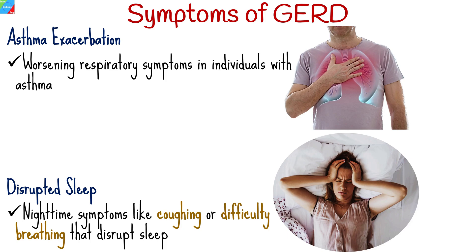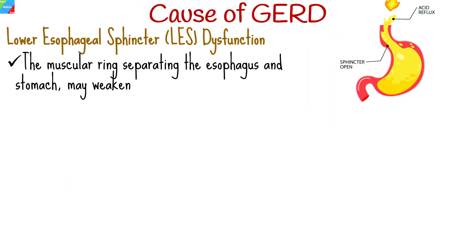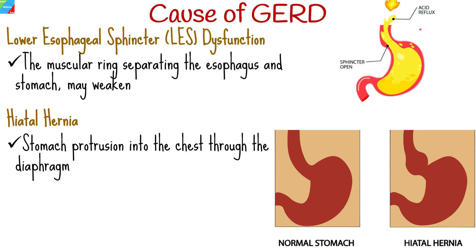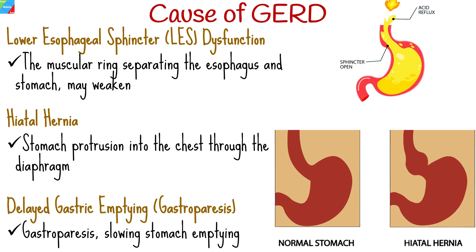Several factors contribute to the development of GERD, including lower esophageal sphincter dysfunction. The lower esophageal sphincter, a muscular ring separating the esophagus and stomach, may weaken, allowing acid reflux. Hiatal hernia, which is stomach protrusion into the chest through the diaphragm, can compromise the lower esophageal sphincter, causing acid reflux.